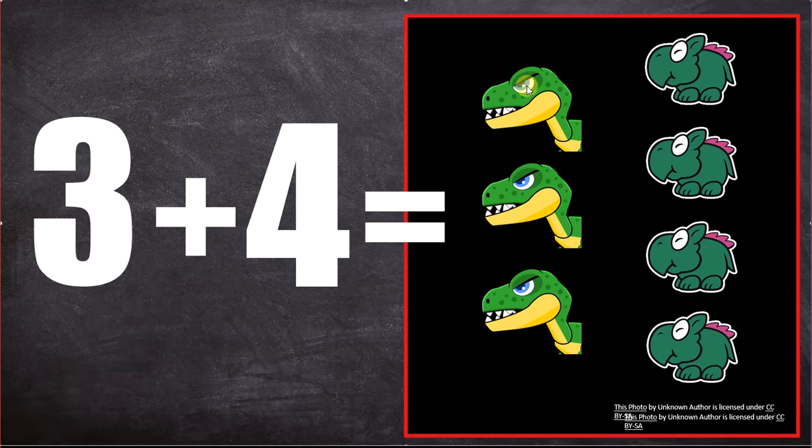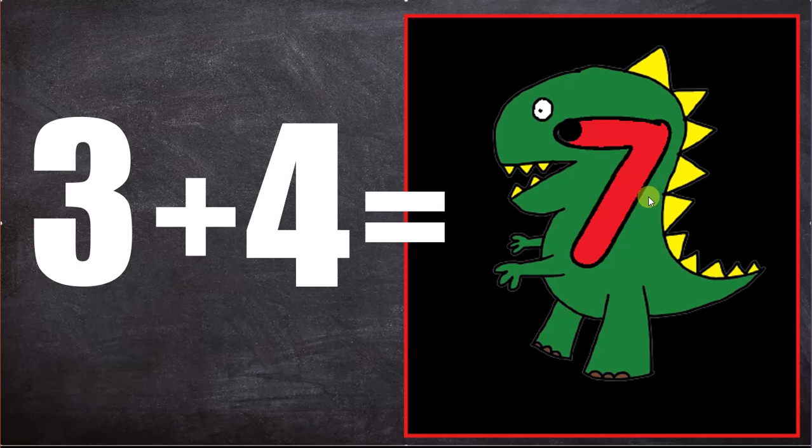Ready? 1, 2, 3, 4, 5, 6, 7. 3 dinosaurs plus 4 dinosaurs equal 7 dinosaurs.